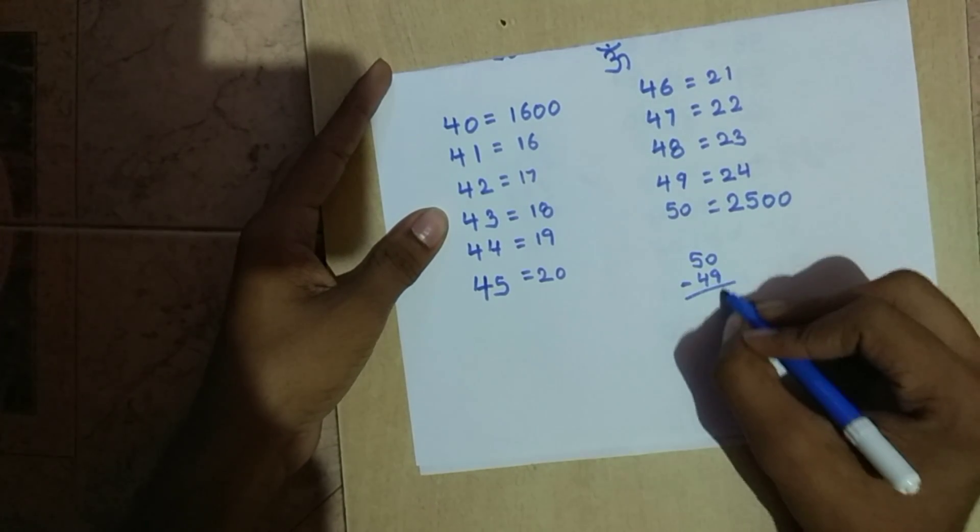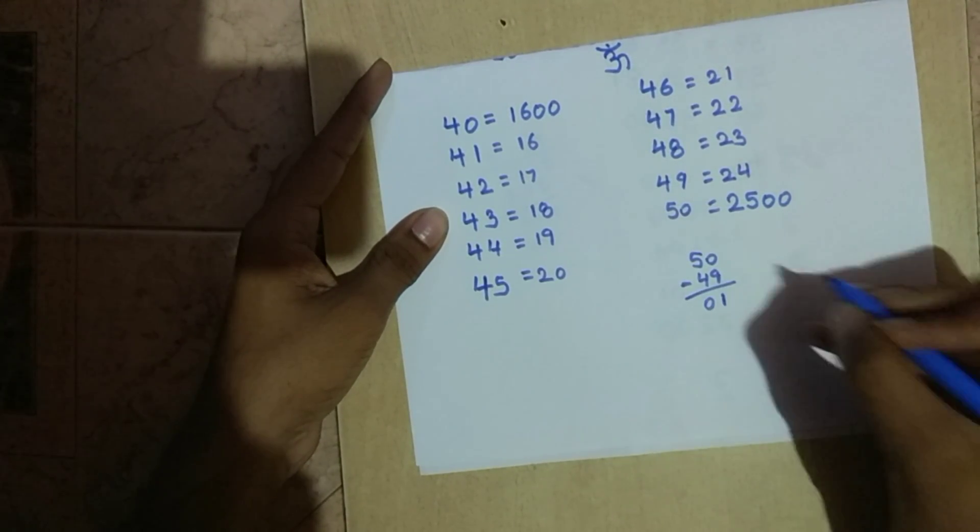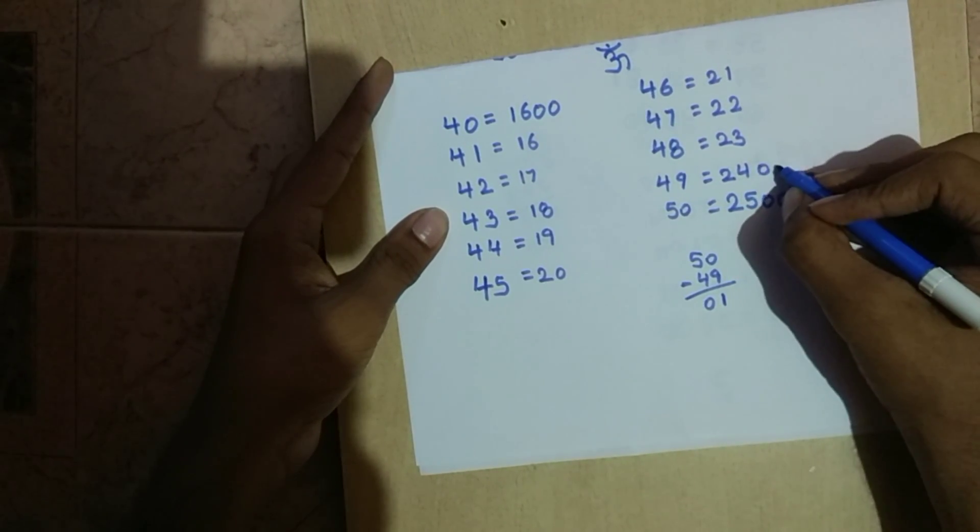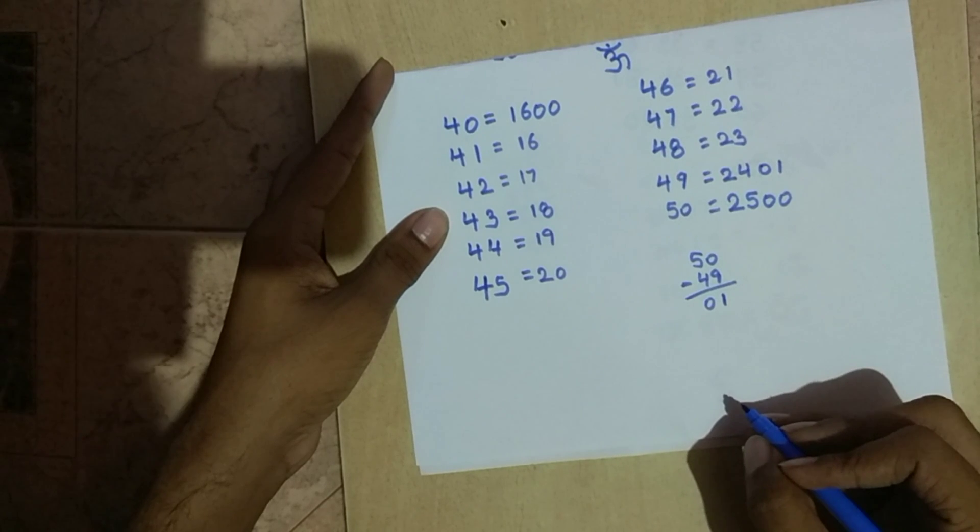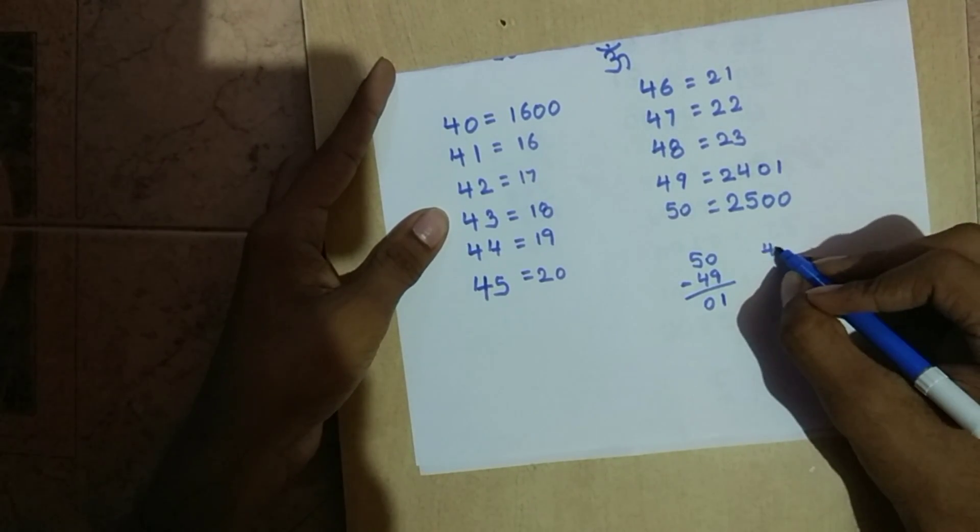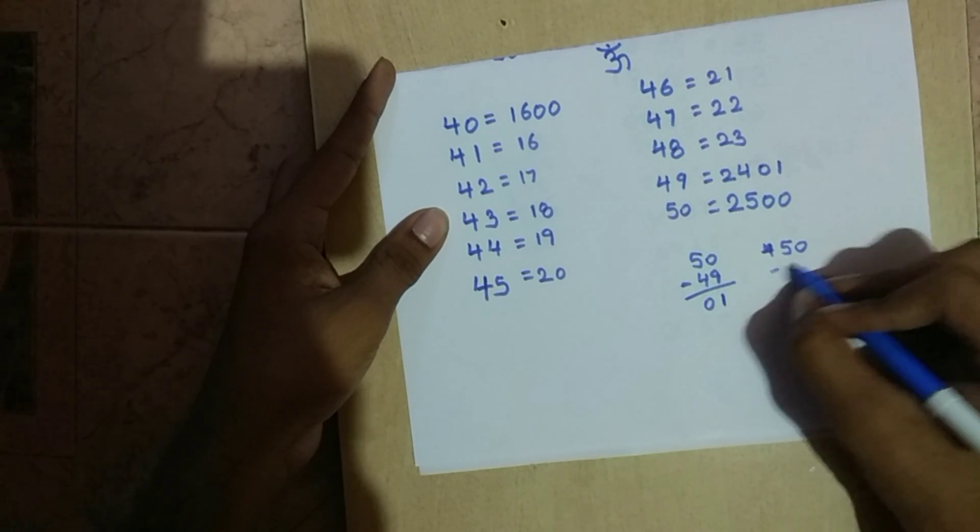For the next two numbers, you need to square the difference of the number and 50. So the difference between 50 and 49 is 01, and the square of 01 is 1. So the next two numbers of 49 will be 01, and the next two numbers of 48 will be 04.